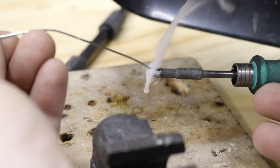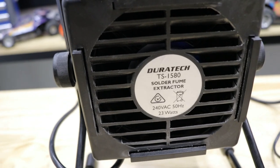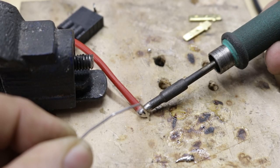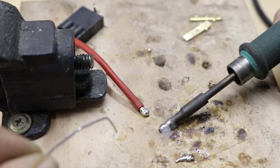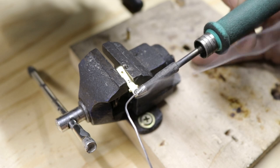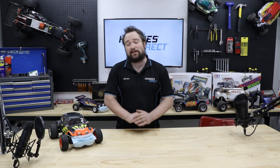Solder fumes are bad news. Always work in a well-ventilated area or use an extractor fan. A key point for soldering is you want to tin both the things you are joining with a bit of solder first. This is a key step that many people, including myself, didn't know when they first started.